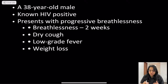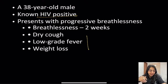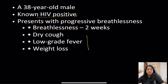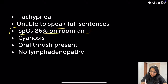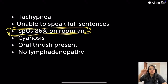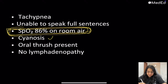We have a 38-year-old HIV-positive male who presents with progressive breathlessness for the past two weeks, associated with dry cough, low-grade fever, and weight loss. On examination, there is involvement of the accessory muscles, nasal flaring, and the patient is unable to complete a sentence. There is tachypnea and SpO2 is 86% on room air. Many HIV-positive patients may walk into your clinic where symptomatology might not be severe, but SpO2 is very poor.